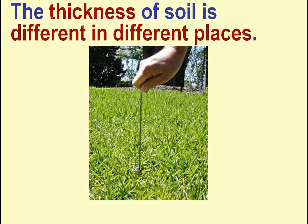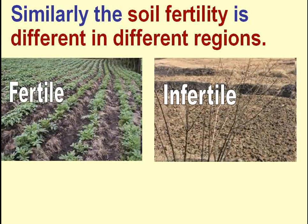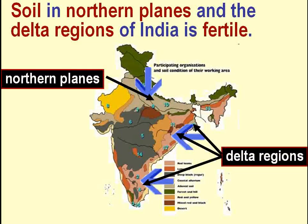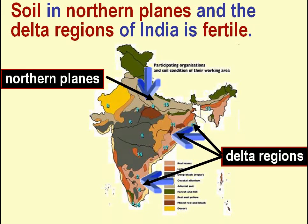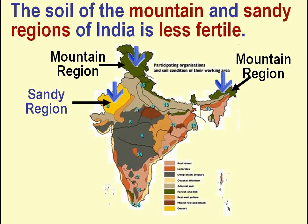The thickness of soil is different in different places. Similarly, the soil fertility is different in different regions. Soil in the northern plains and the delta regions of India is fertile, while the soil of the mountain and sandy regions of India is less fertile.